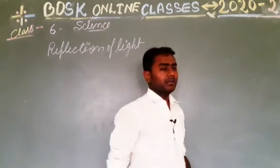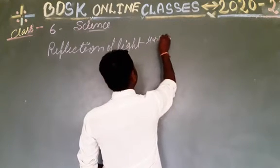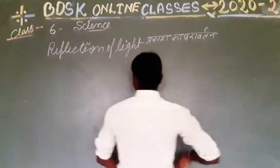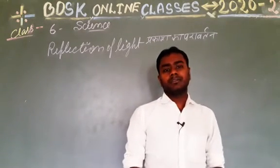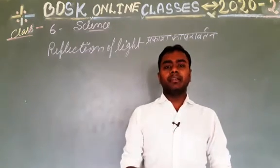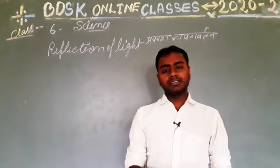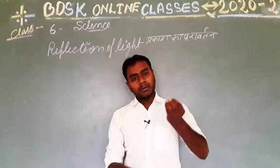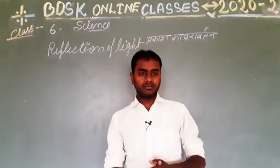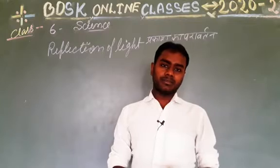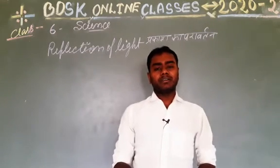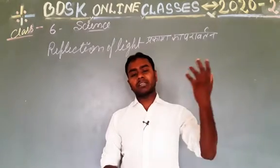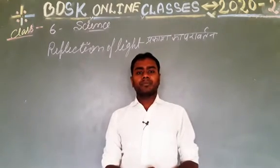Reflection of light — prakaz ka pravartan. When a ray of light is incident on a smooth surface, polished surface, or mirror, it bounces back in the same direction. This phenomenon is called reflection of light, or prakaz ka pravartan.